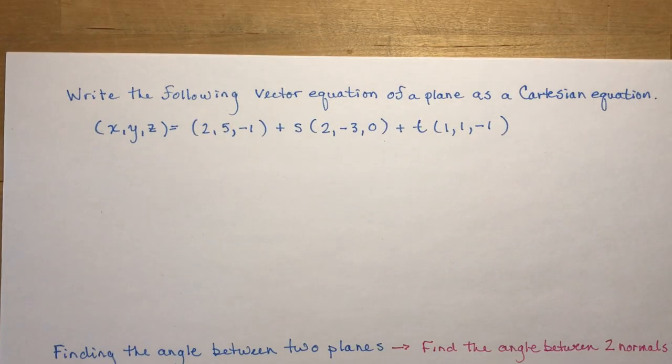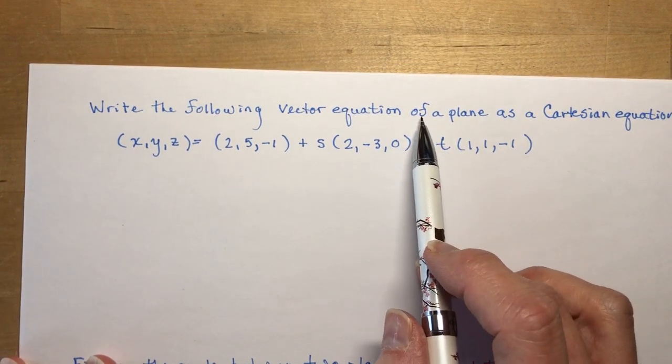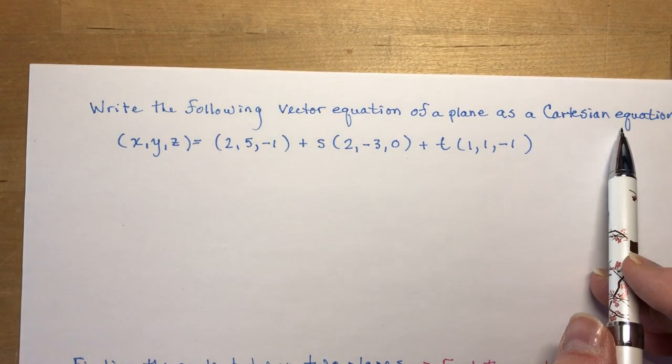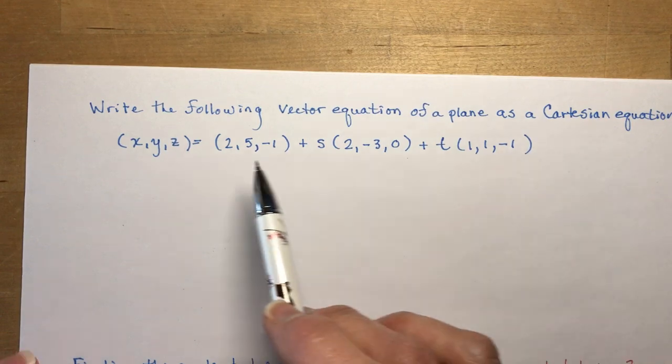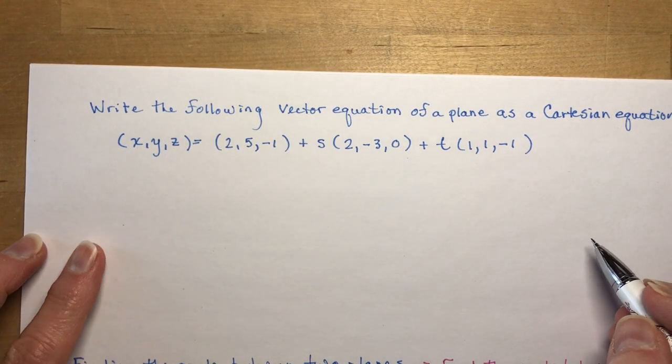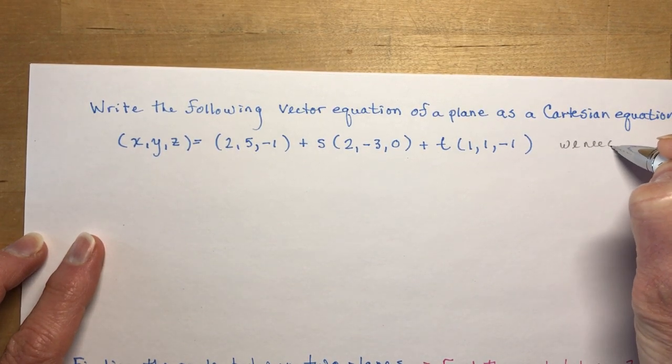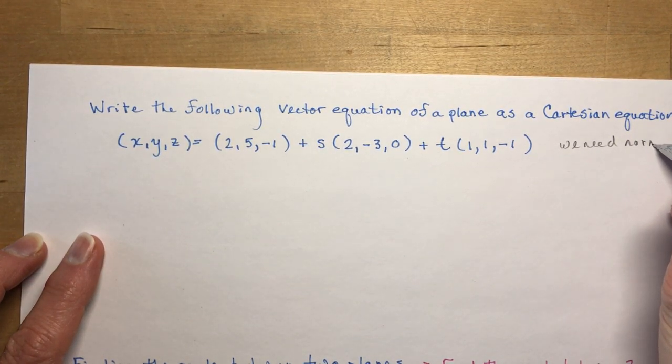So let's see, how would we do a question like this? That says, write the following vector equation of a plane as a Cartesian equation. So we want the Cartesian equation of this vector equation. So for a Cartesian equation, we need the normal.